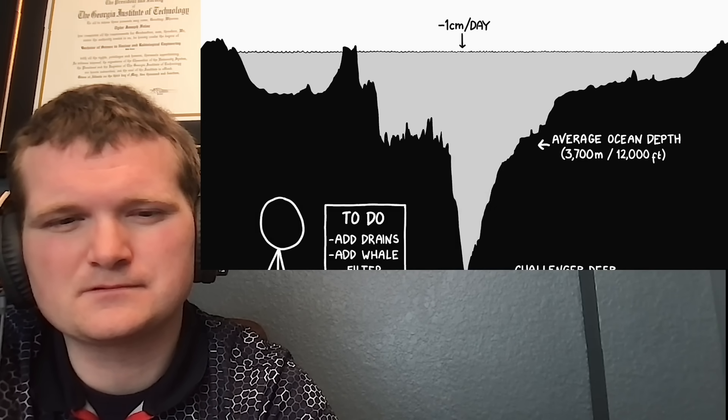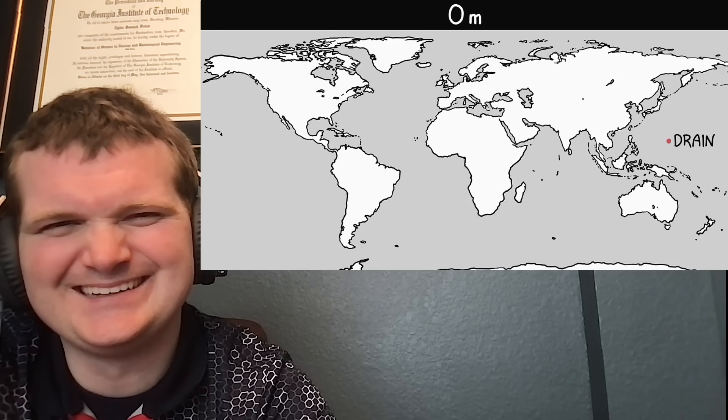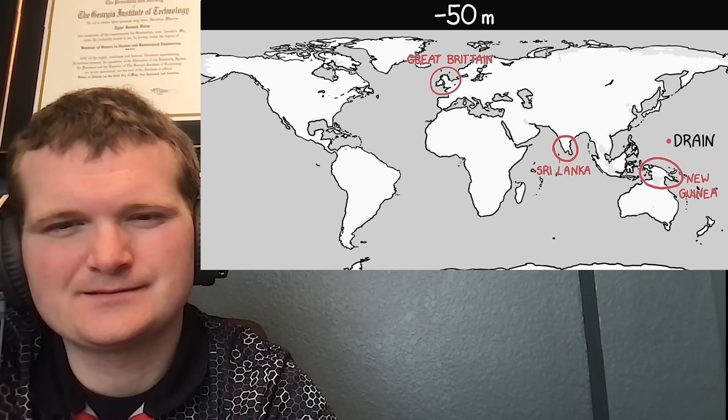Let's suppose we speed up the draining by opening more or bigger drains. Here's how the world looks at the start, and here's the map after the oceans drop 50 meters. It's pretty similar, but there are a few small changes. Great Britain, Sri Lanka, New Guinea, Java, and Borneo are all now connected to their neighbors.